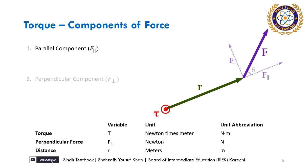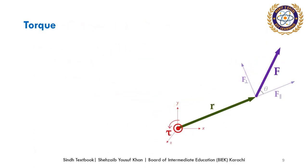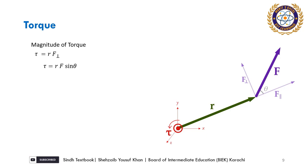If you apply the parallel component of force, it will not rotate the body. The perpendicular component can rotate the body. The parallel component can only push or pull. We know the parallel component fx = F cos θ and perpendicular fy = F sin θ, so only the perpendicular component is useful for torque. The magnitude of torque equals the force arm multiplied by the perpendicular component of force, which is r × F sin θ, and this links to the vector product.